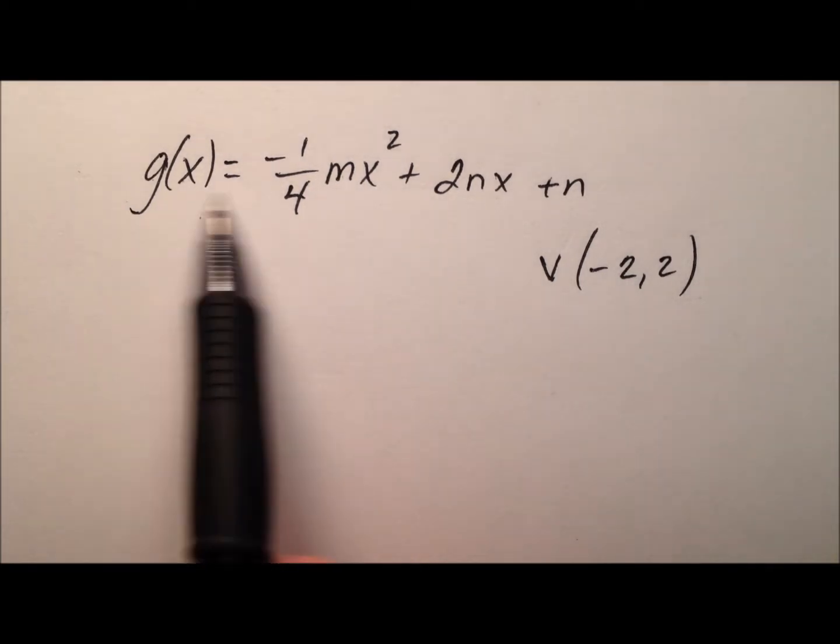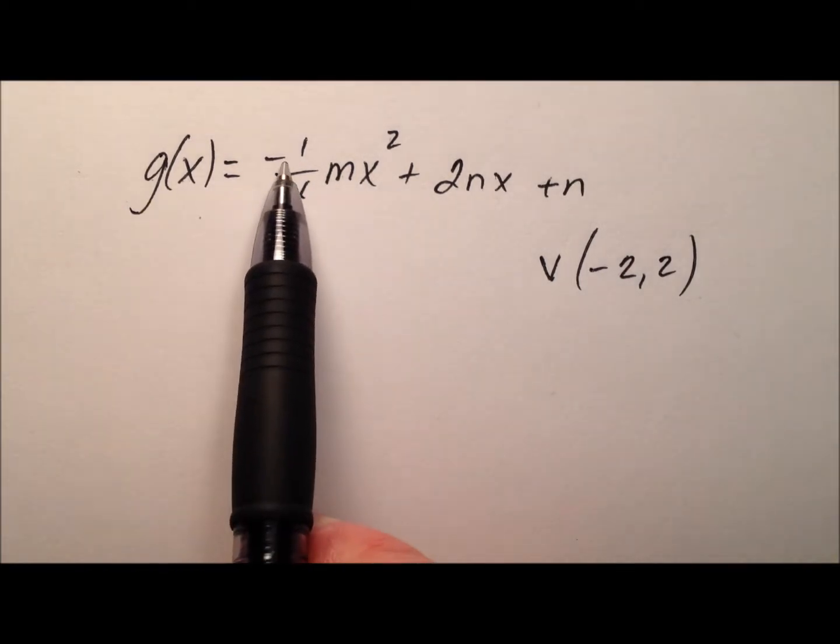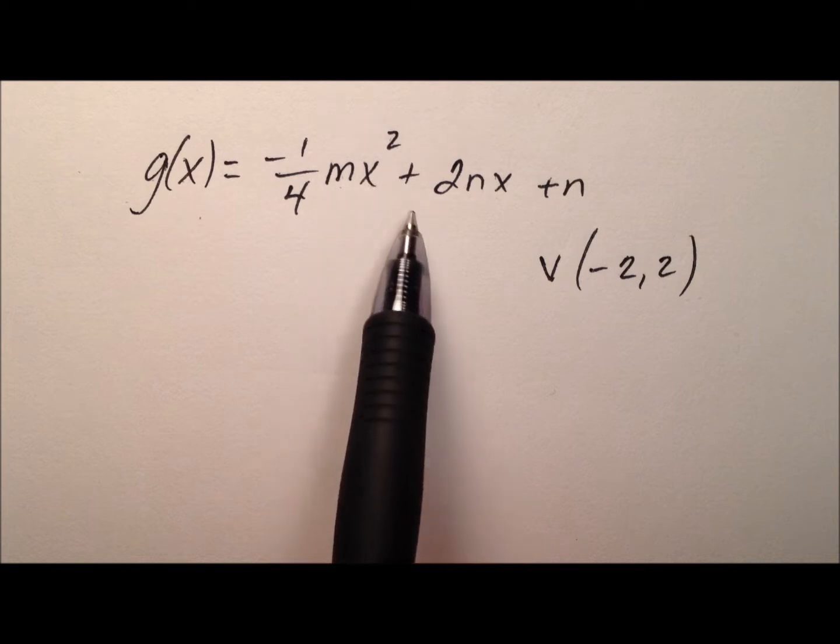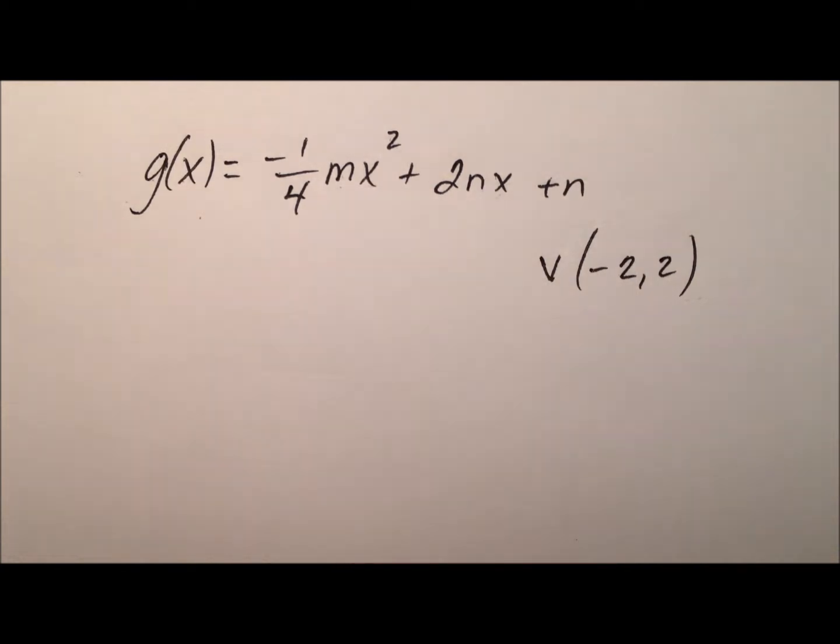In this example, I have a function here, g of x, and it equals negative one-fourth m x squared plus 2nx plus n.